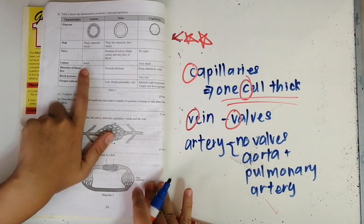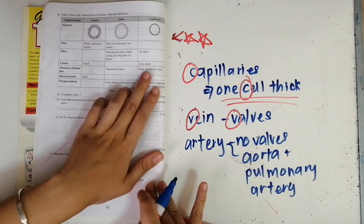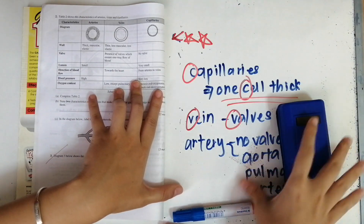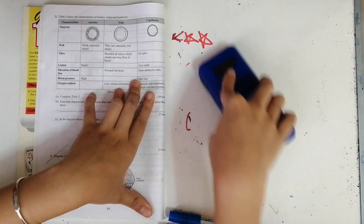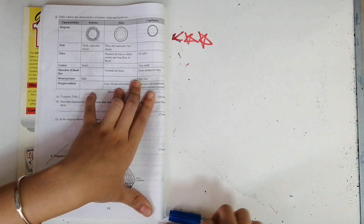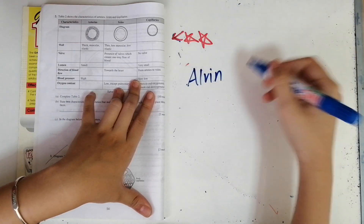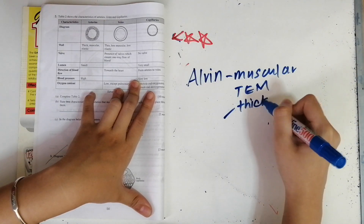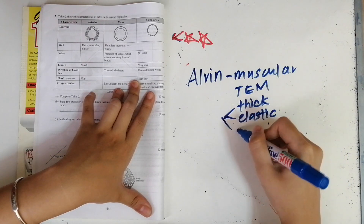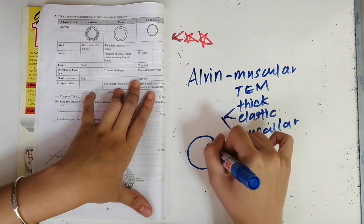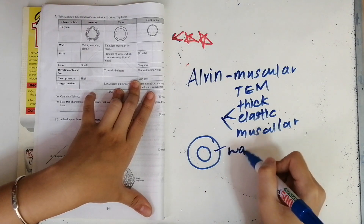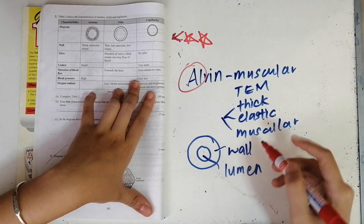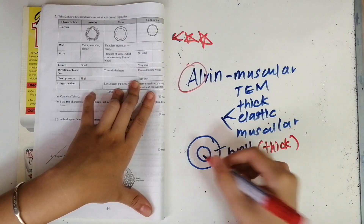Now we look at the lumen. The lumen of a capillary is very small — remember that. The lumen of an artery is small. Remember that artery is thick, elastic, and muscular. The lumen is the space inside the wall — and when the wall is thick, common sense tells you the lumen will be small.